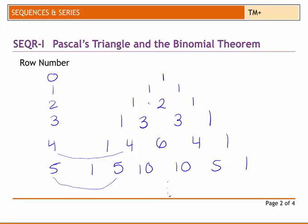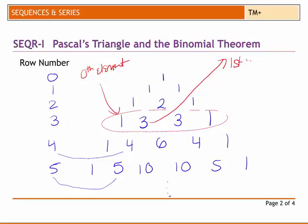In terms of elements we always start with the 0 element and that's why that 4 is a second element. So if we look at this row here, that's the 0th element and that 3 is the first element.